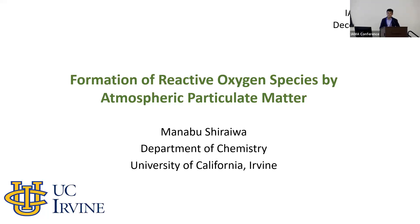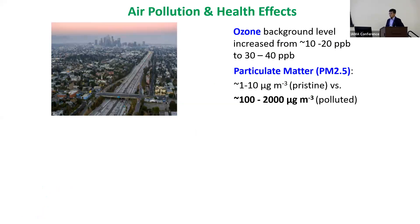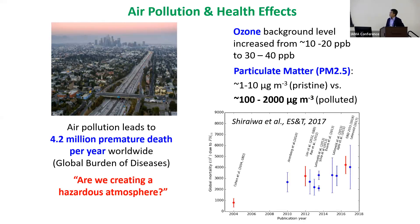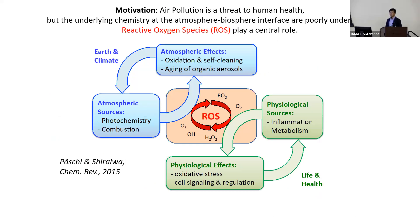Thanks for the kind introduction and thanks to the organizer for the opportunity to talk about formation of reactive oxygen species by atmospheric particulate matter. Starting from the big picture: the health effects of air pollution — particulate matter concentration can be very high in polluted air, and people die because of that. About 4.2 million people die per year, estimated in 2017; the latest estimate is almost 6 million. Air pollution is really harmful.